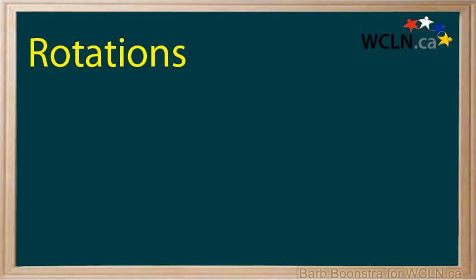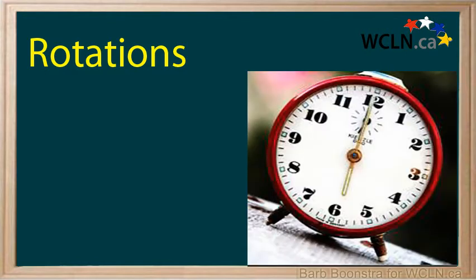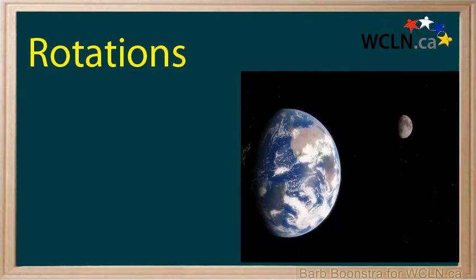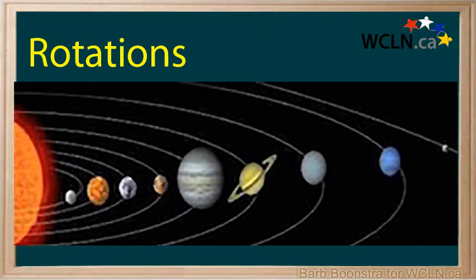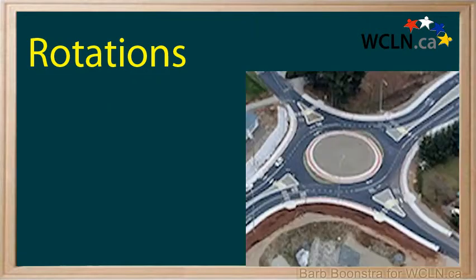A rotation is a transformation in which the object is rotated about a fixed point. The hands of an analog clock rotate around the face. The moon rotates around the earth. The earth and all its planets rotate around the sun.